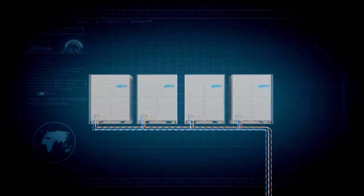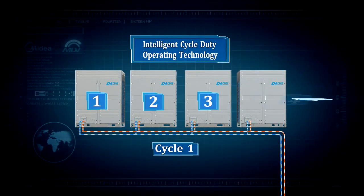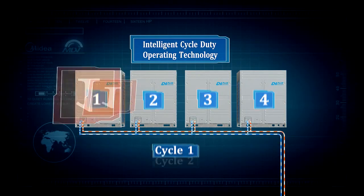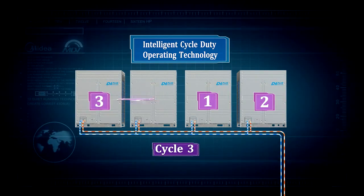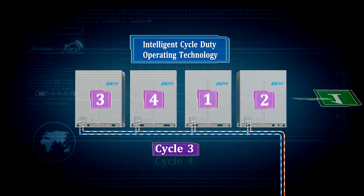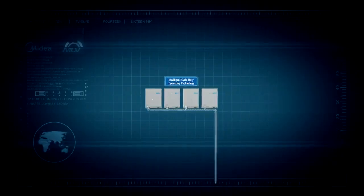Cycle Duty Operation Technology. In one combination, any of the outdoor units can run as the master outdoor unit to equalize the lifespan among the outdoor units. Compressor priority is changed sequentially to extend operating life also.